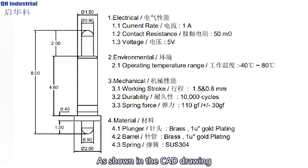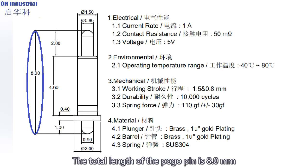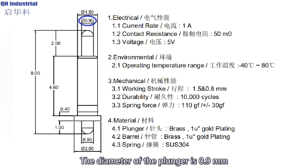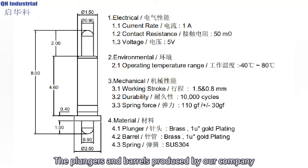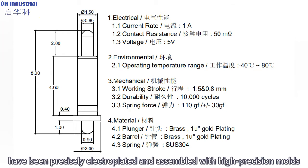As shown in the CAD drawing, the total length of the pogo pins is 8 mm. The diameter of the plunger is 0.9 mm and the diameter of the barrel is 1.5 mm. The plungers and barrels produced by our company have been precisely electroplated and assembled with high precision molds.